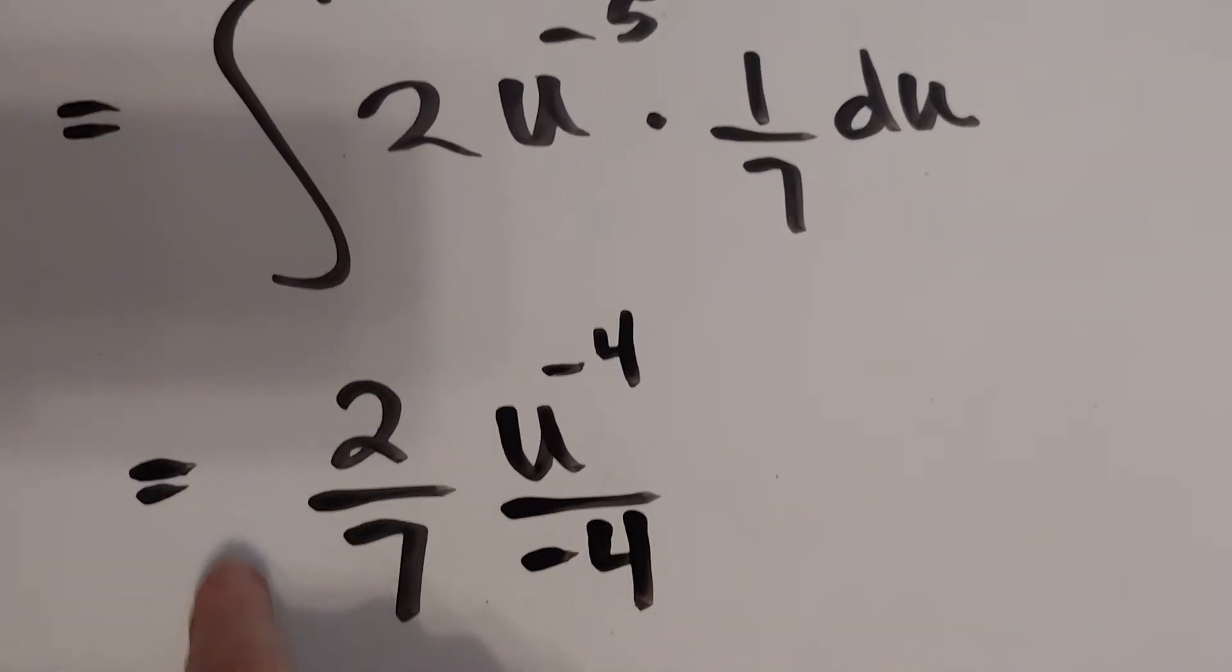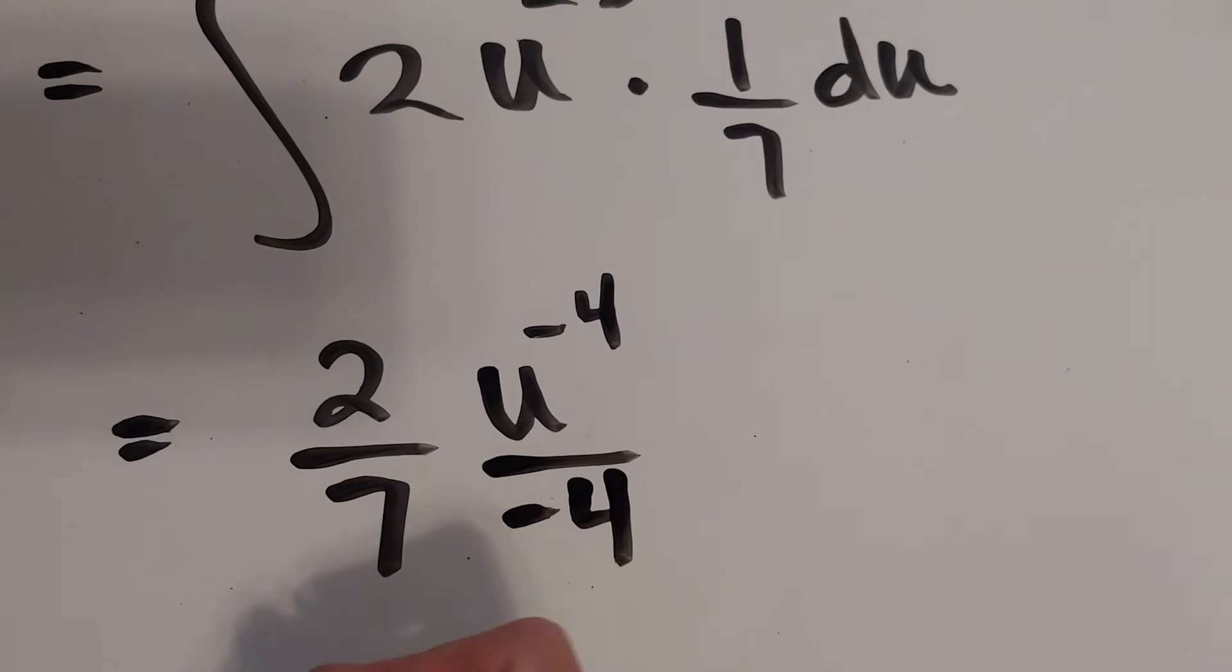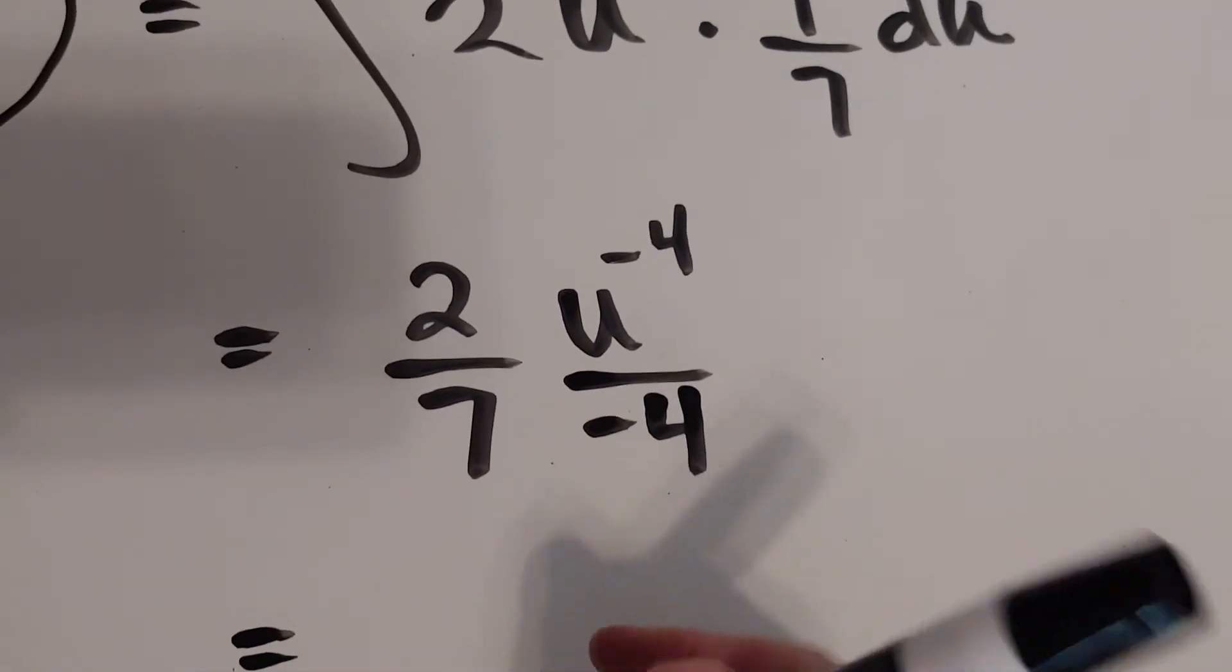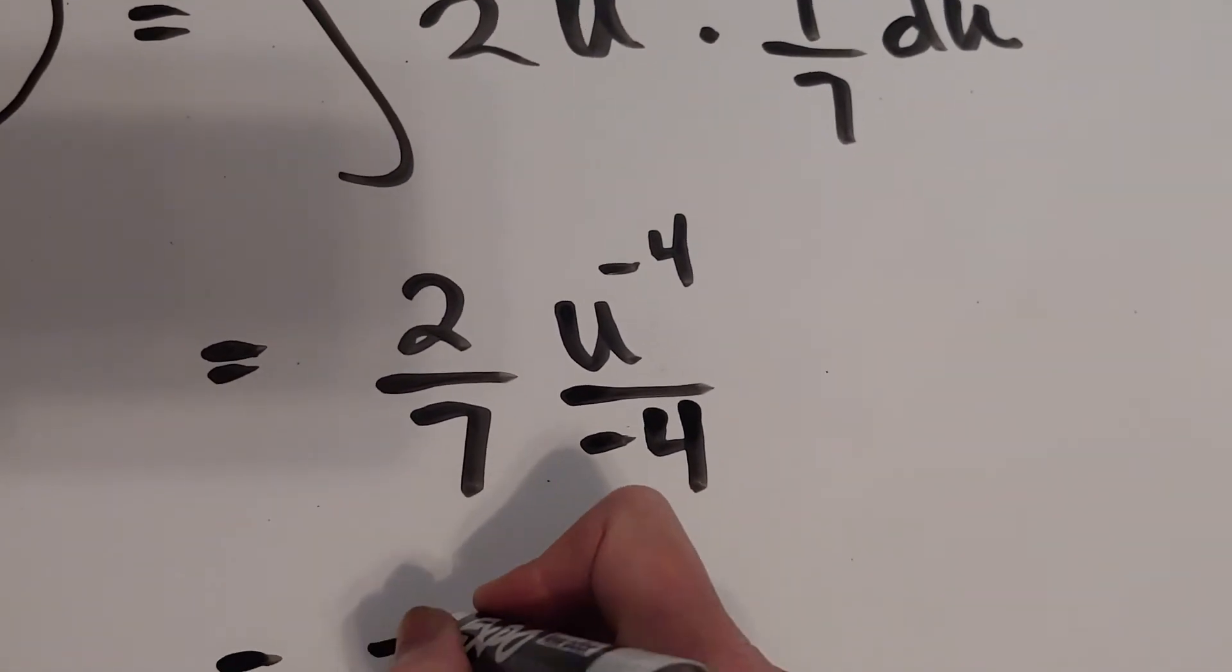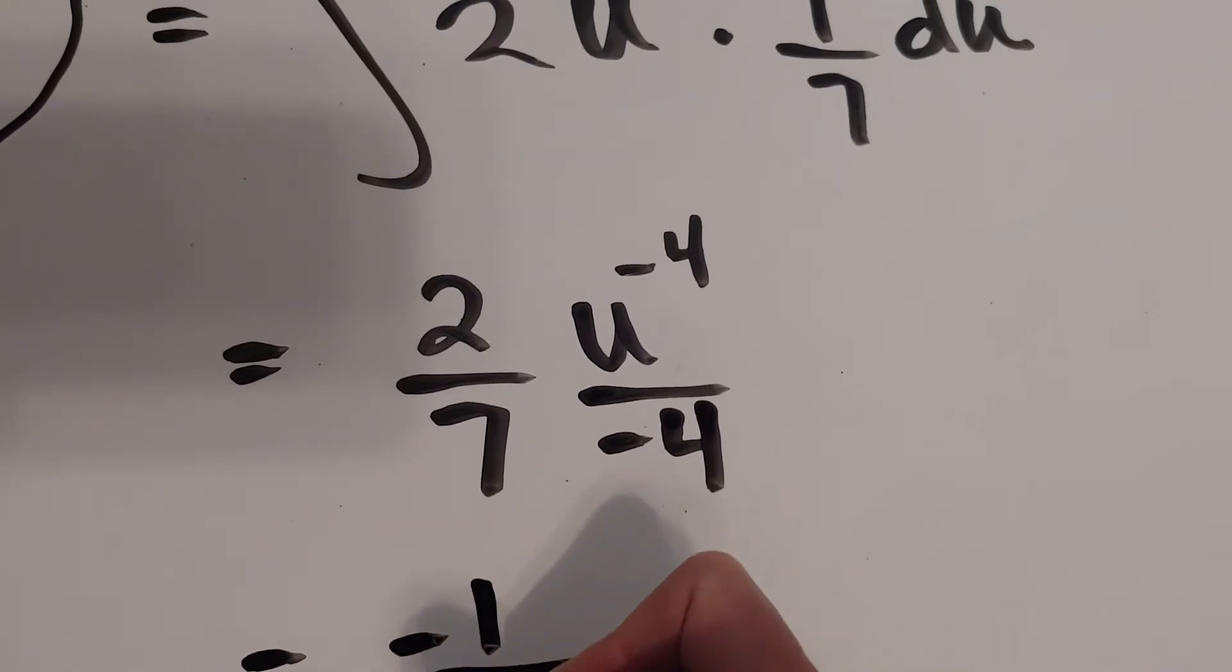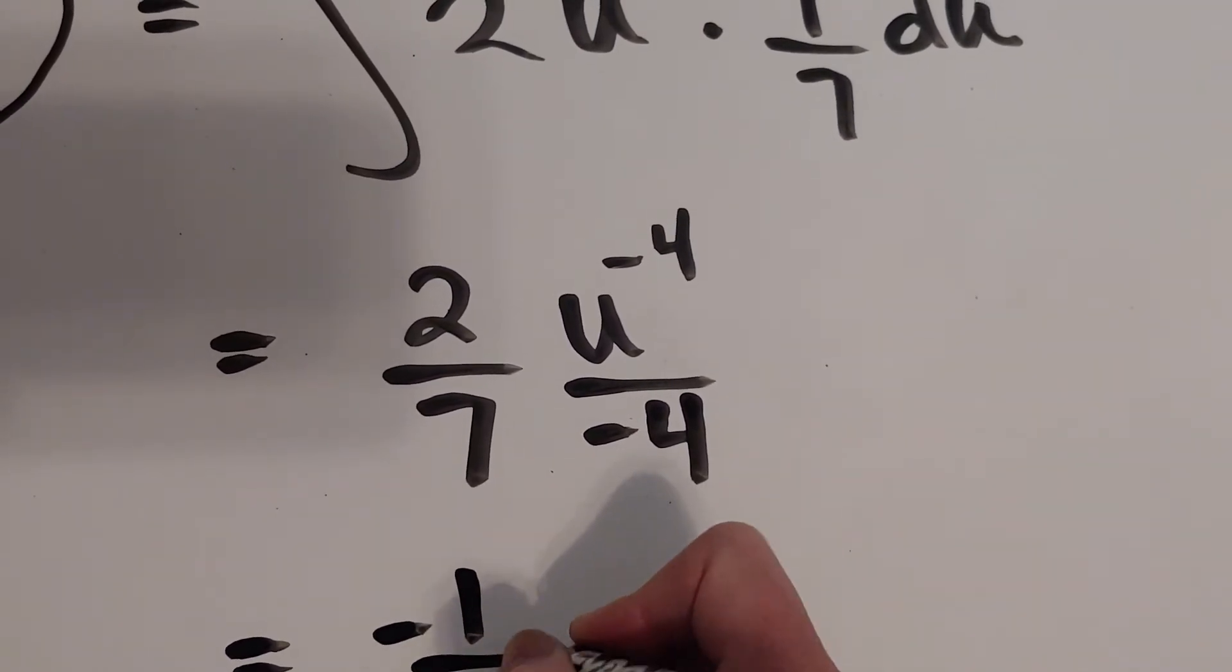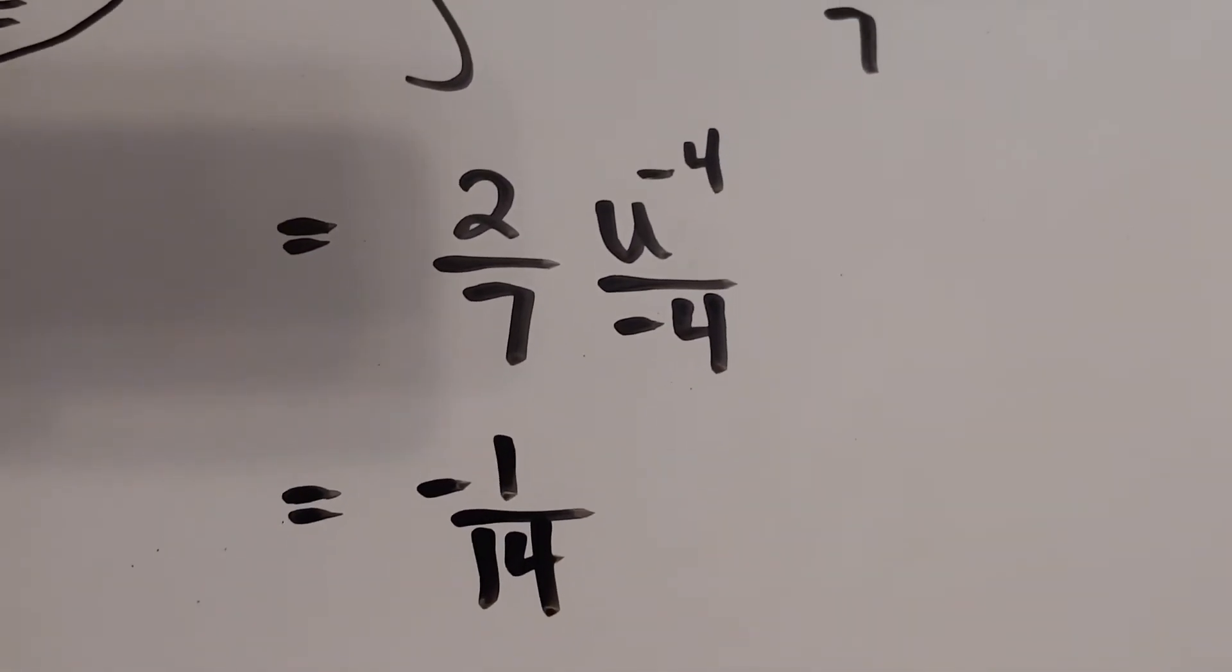Now I'm going to go ahead and combine all these coefficients. So this would be 2 over negative 28, which is the same thing as 1 over a negative 14 or negative 1 14ths. That's the reduced form.